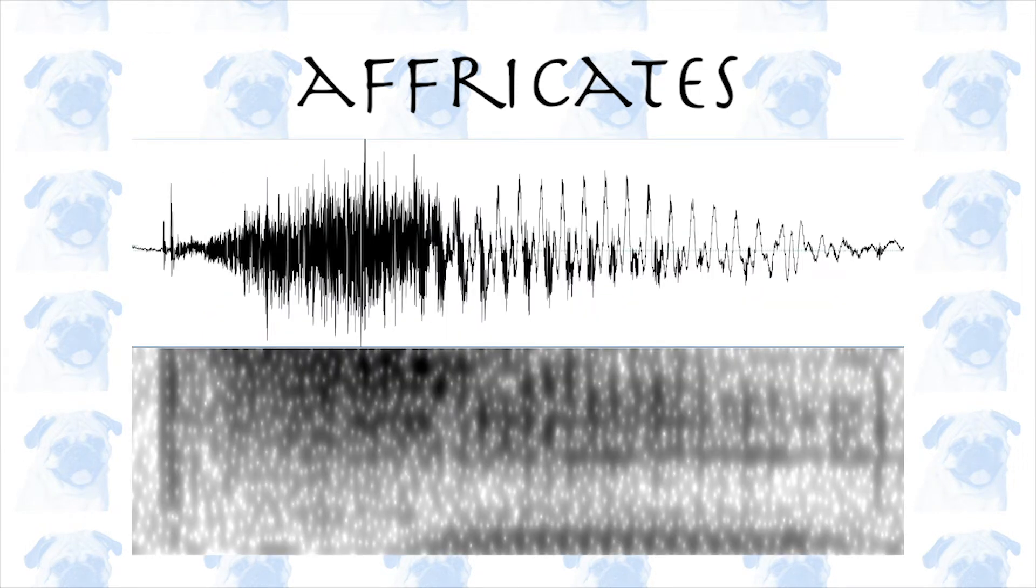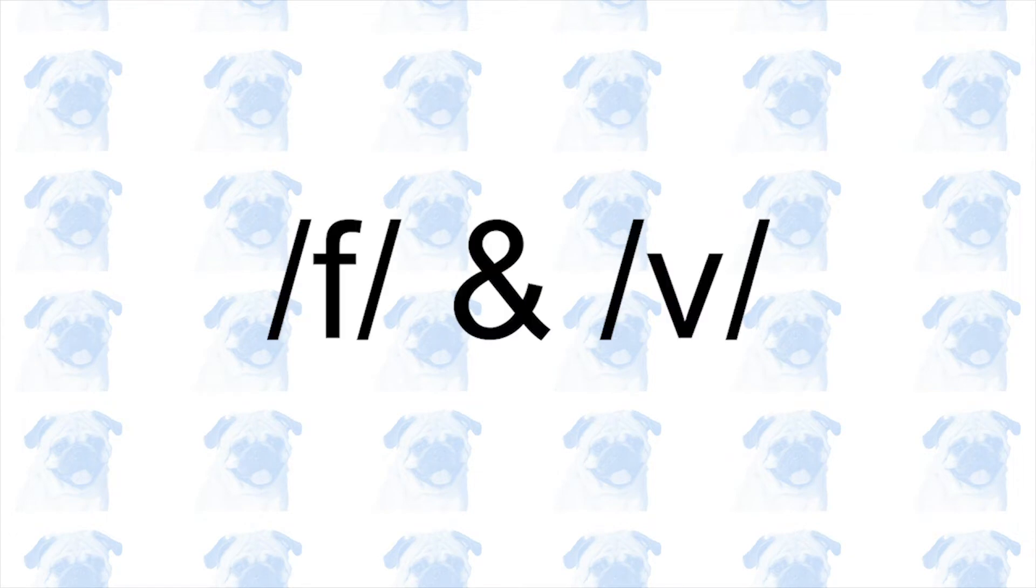If you look at the spectrograms of these sounds, you can see that they can be divided into two parts, the plosive part and the fricative part. Now that we know what fricatives and affricates are, let's look at the first pair of fricatives.